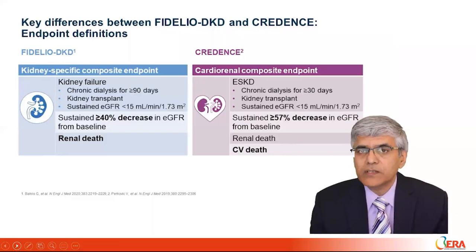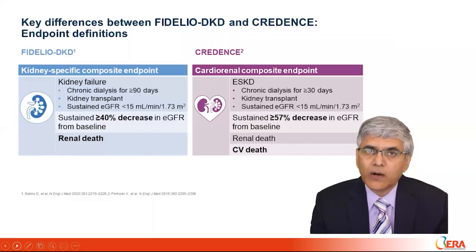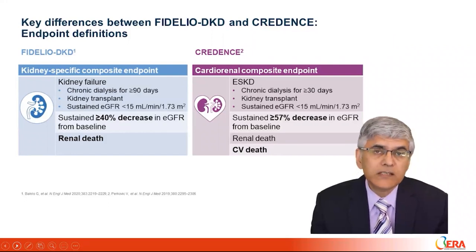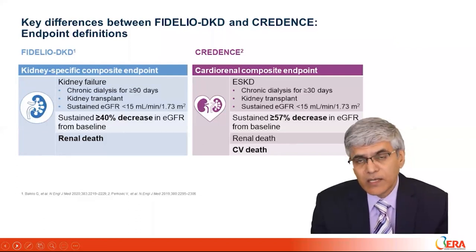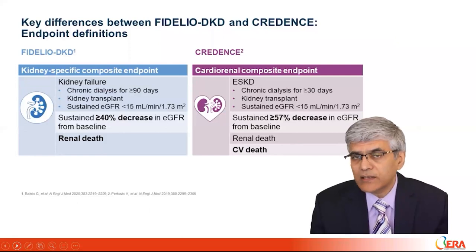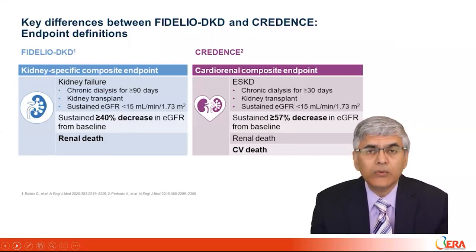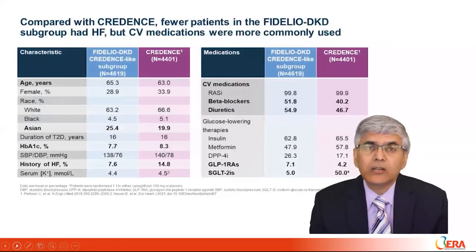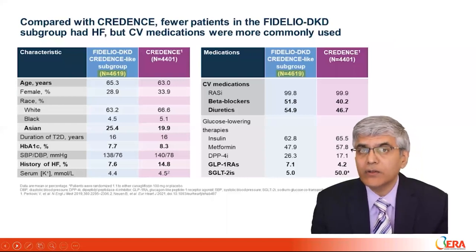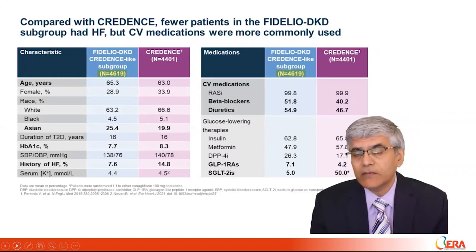There were also key differences in endpoint definitions. The kidney-specific composite endpoint was similar, except that Fidelio-DKD required a sustained 40% decrease in eGFR, whereas CREDENCE required a sustained doubling of serum creatinine — equivalent to at least a 50% decrease in GFR from baseline. Furthermore, CREDENCE included cardiovascular death as a component of its composite endpoint, whereas Fidelio-DKD did not. A total of 4,619 of 5,674 patients — approximately 81% — in Fidelio-DKD met CREDENCE-like criteria of UACR 300–5,000 mg/g and eGFR 30–75 at screening, and were included in this analysis.